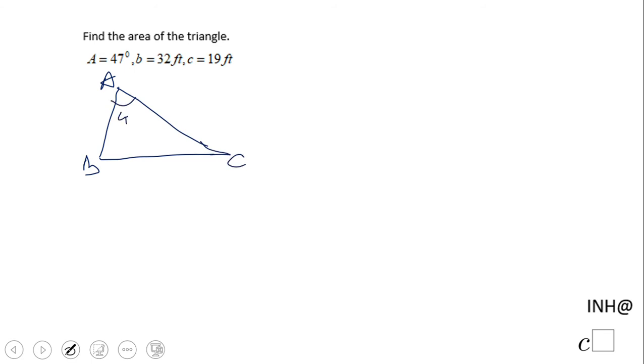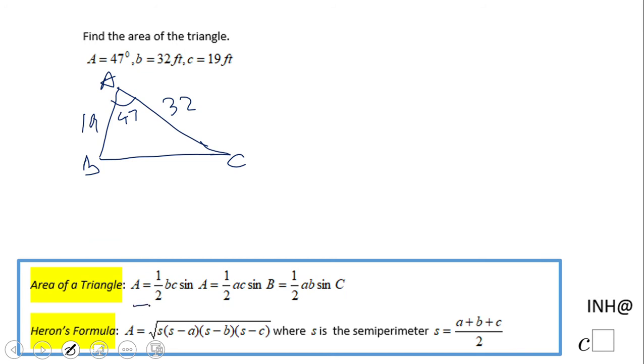We know this angle is 47 degrees. It's very important: b is 32, c is 19. If you notice, we have two sides and the angle included, so for that reason I'm going to use this formula.